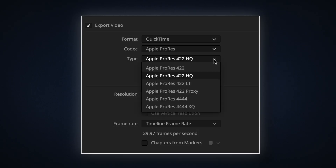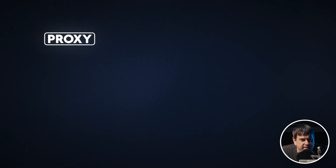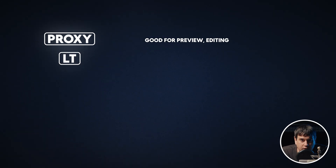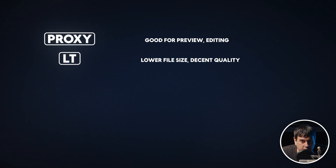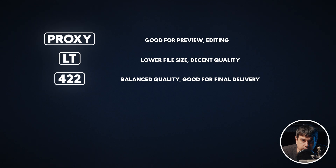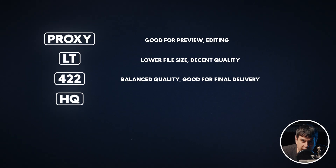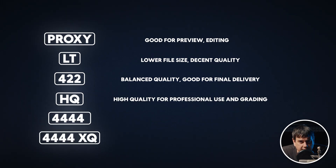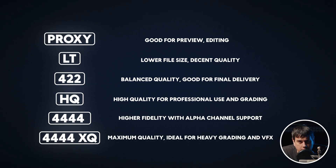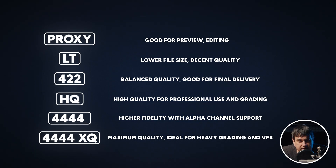There are six ProRes options to choose from. Proxy is only useful for editing, not final exports — file sizes are the smallest but quality is limited. LT stands for Light and weighs about 30% less than regular ProRes, good enough for general edits or even YouTube. 422 is optimal for broadcast — file sizes are larger but quality is excellent. HQ is the highest in the 422 family, ideal for high-end masters. The last two are designed for heavy grading or VFX work and are the only ones in the ProRes family that support alpha channels, making them ideal for overlays or graphics.